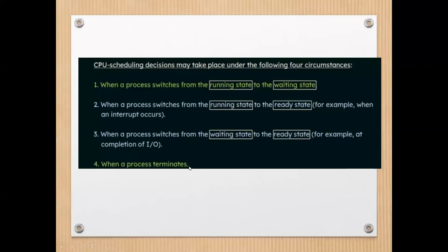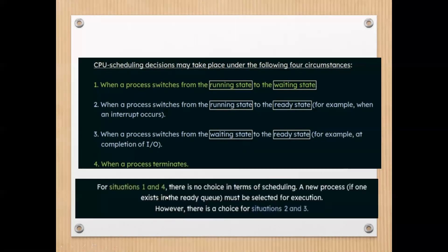The last circumstance is when a process terminates — the process gets the CPU, executes smoothly, terminates itself, and all resources are released. For situations 1 and 4, there is no choice in scheduling — a new process from the ready queue must be selected for execution. However, there is a choice for cases 2 and 3.